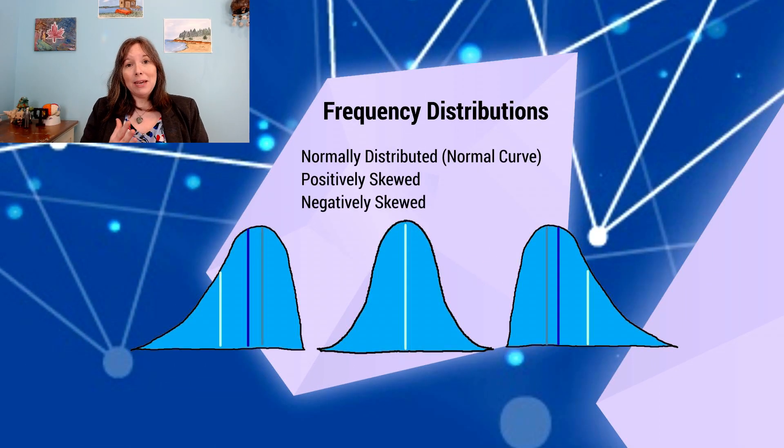So again, when the mean, median, mode are all the same, we have a special type of curve that has special mathematical properties. This is called a normal curve or a normal distribution. And as mentioned, almost all human characteristics, if measured a certain way, are normally distributed.